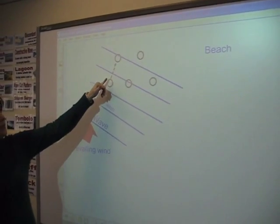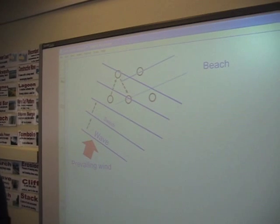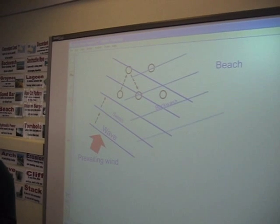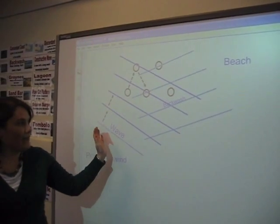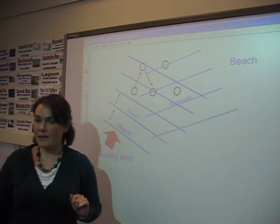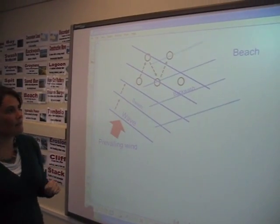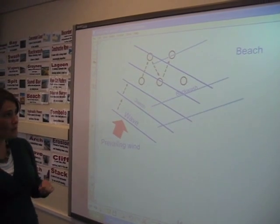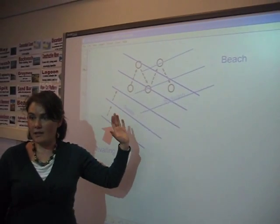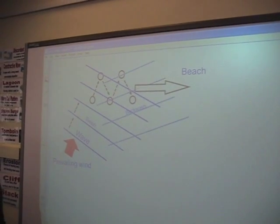Essentially, particles move with the waves. So that particle has moved with that wave forward to the next place. Then as the backwash comes back down, that material then moves back down the beach. The next wave comes in, moving that particle up the beach — once again, the swash. And again, the returning wave brings the material back down the beach. So long term, what happens is that material is moving from one side of the beach to the other, down the coast. And that essentially is the process of longshore drift.